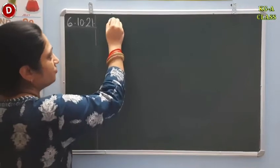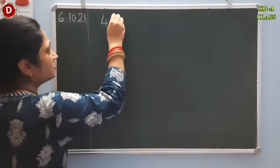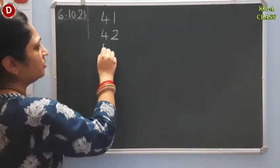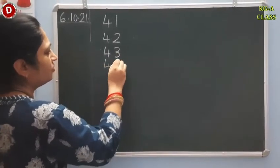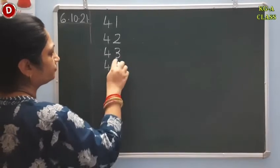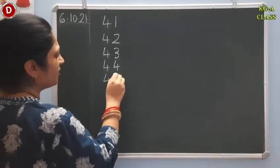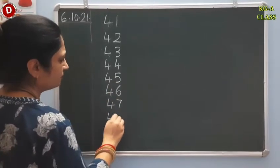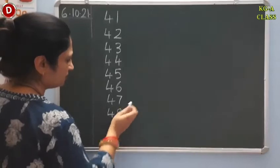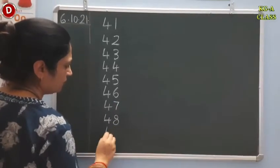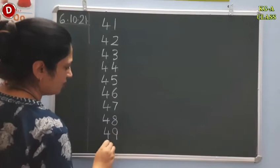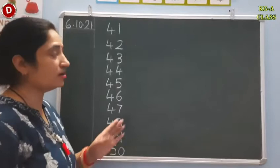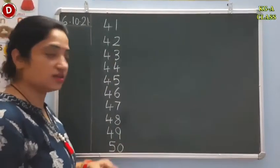After 40 comes 41. Look here: this is 41, then 42, then after 42 comes 43, 44, then comes 45, 46, 47, 48, 49. And after 49 comes 50. In this way children, you have to write numbers 41 to 50.